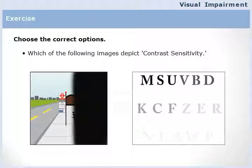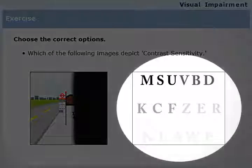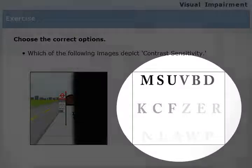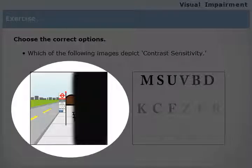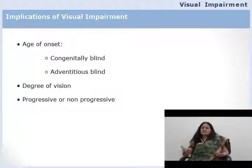Which of the following images depicts contrast sensitivity? In contrast sensitivity, a visually impaired person cannot see an object unless it is provided against an absolutely good contrast background. The other image depicts hemisphere loss, where a visually impaired person can see only one half of the visual field.